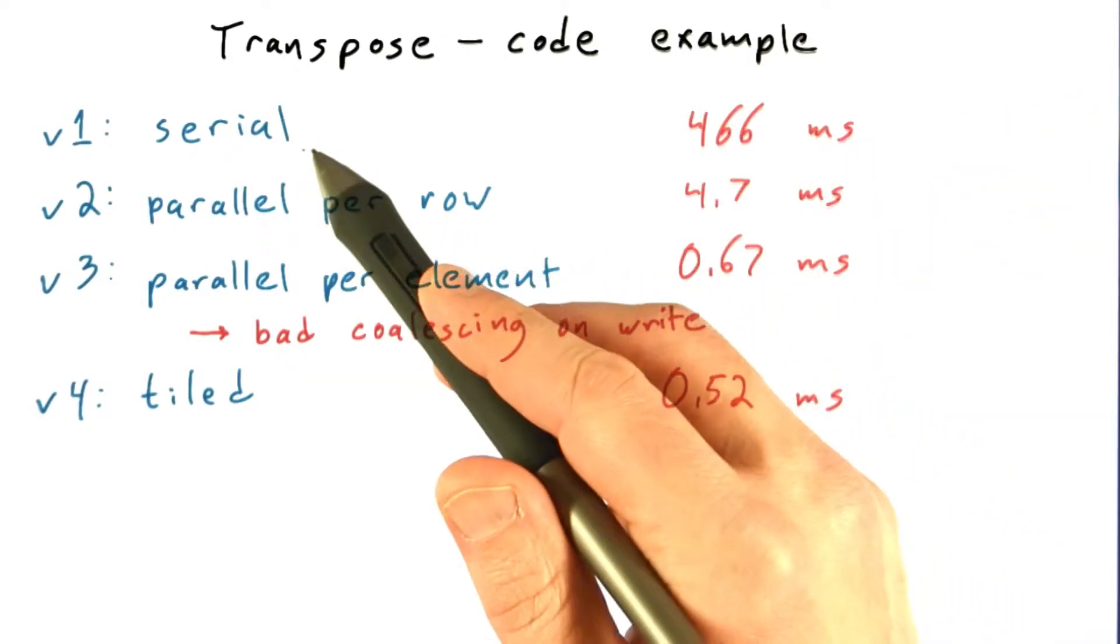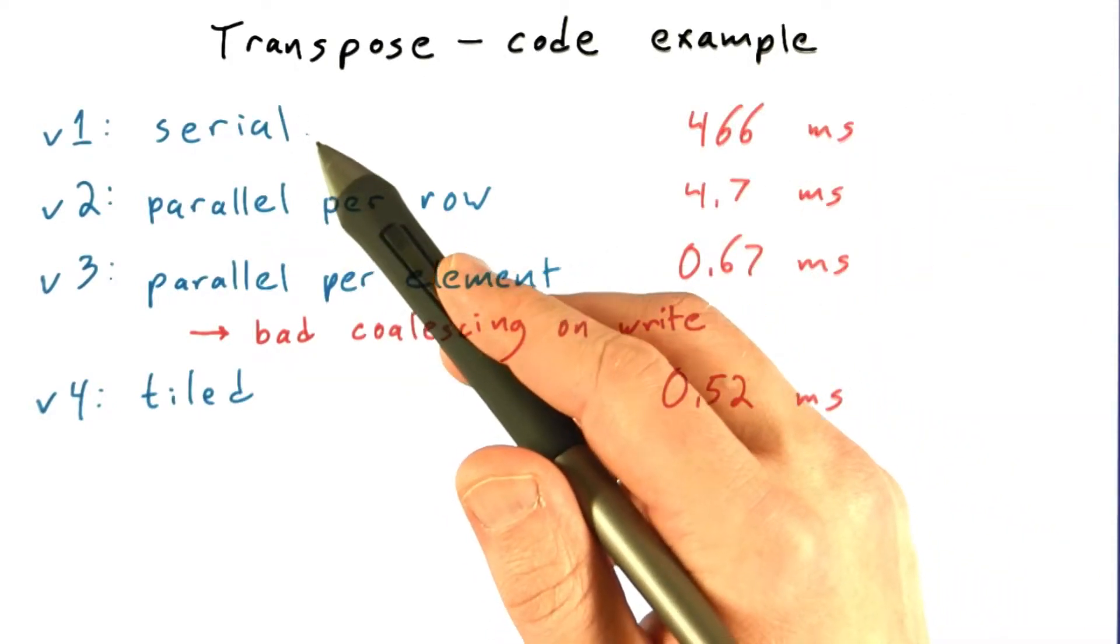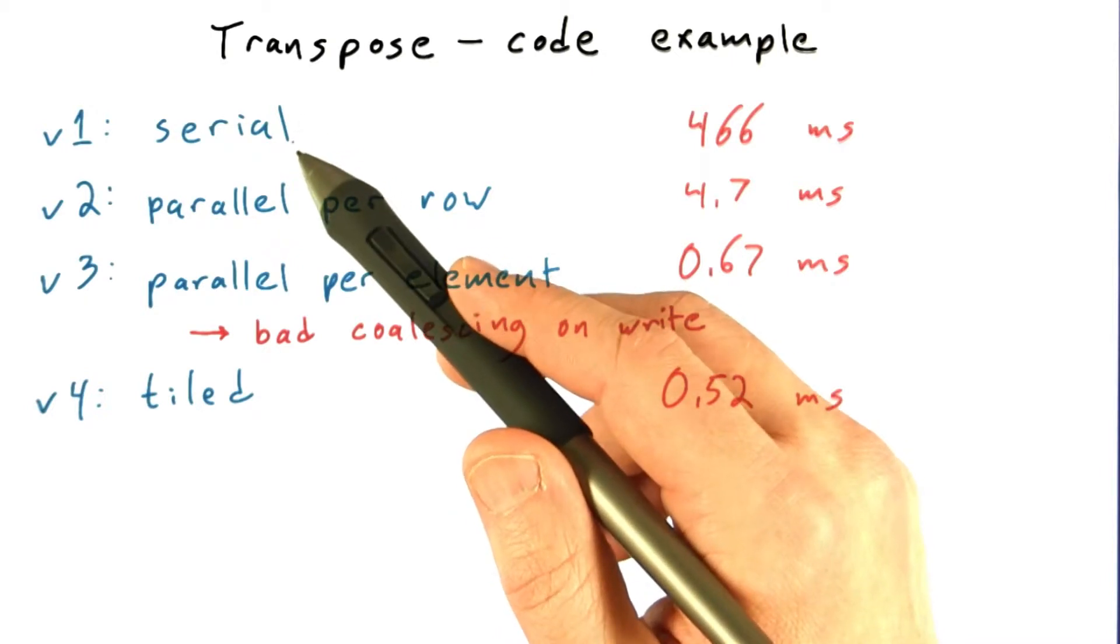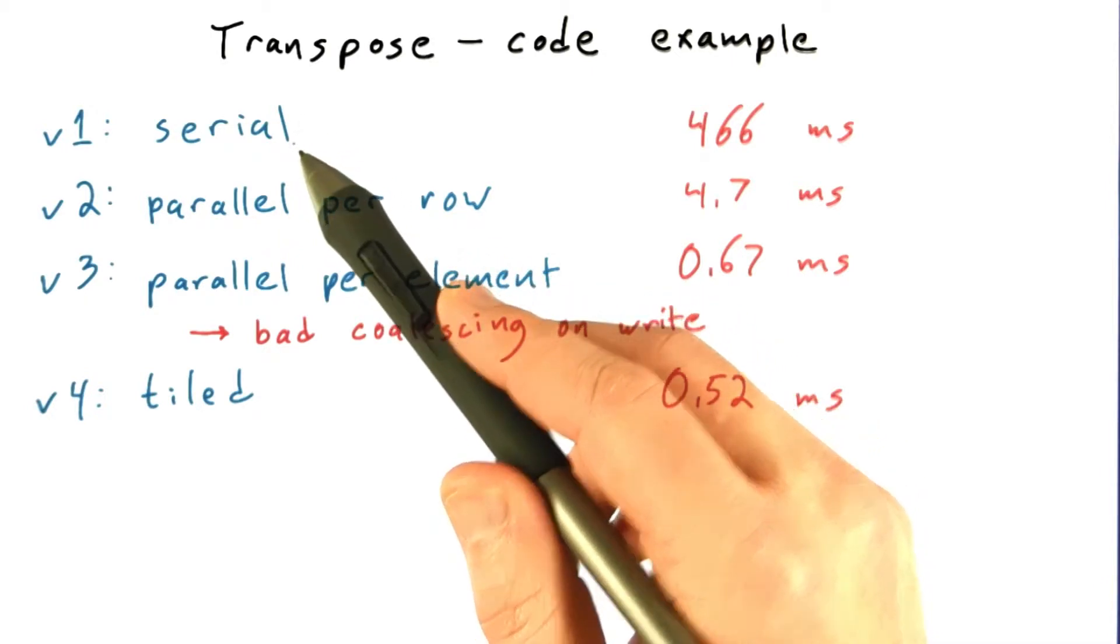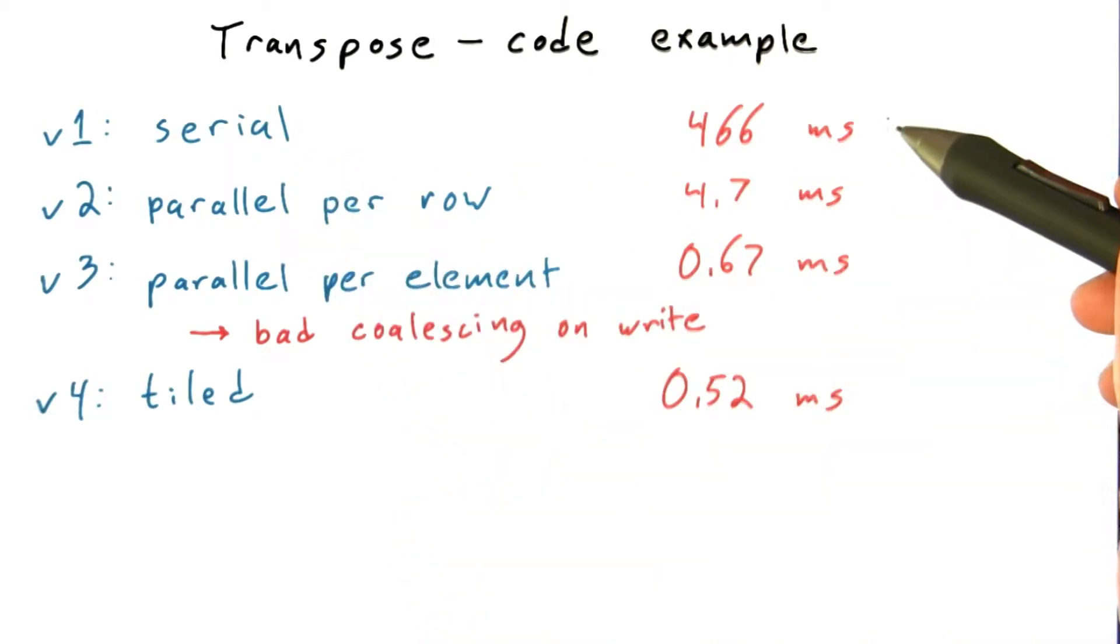Let's quickly recap. We had a serial version of the code that did everything in a single thread. Trivial to write that code, zero parallelism, and pretty terrible performance.